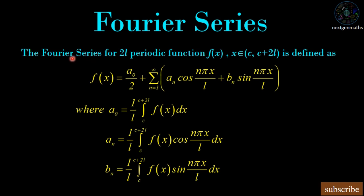We begin with the definition of Fourier series. The Fourier series for a 2L-periodic function f(x), where x belongs to c to c+2L, is defined as f(x) = a₀/2 + Σ(n=1 to ∞) [aₙ cos(nπx/L) + bₙ sin(nπx/L)], where a₀, aₙ, and bₙ are called Fourier coefficients. Here a₀ = (1/L)∫[c to c+2L] f(x) dx, aₙ = (1/L)∫[c to c+2L] f(x) cos(nπx/L) dx, and bₙ = (1/L)∫[c to c+2L] f(x) sin(nπx/L) dx.